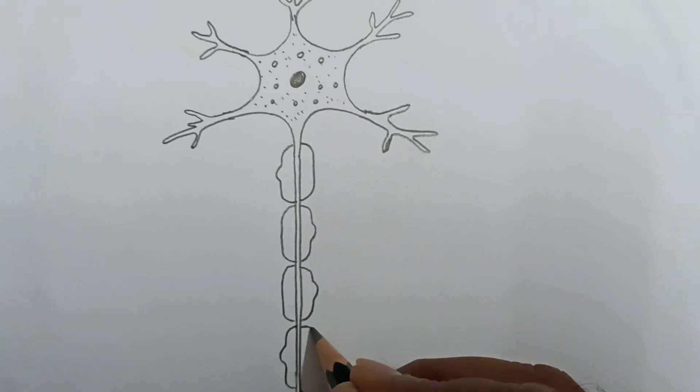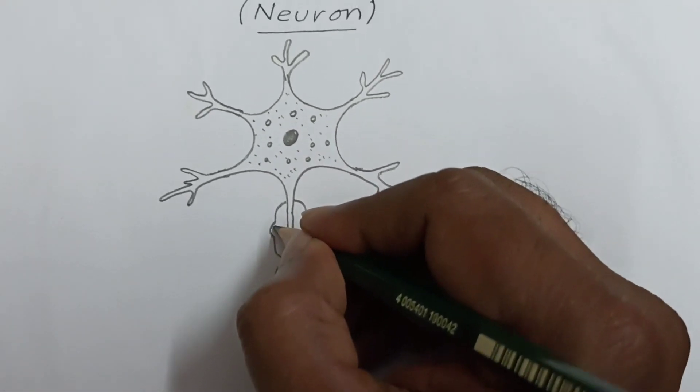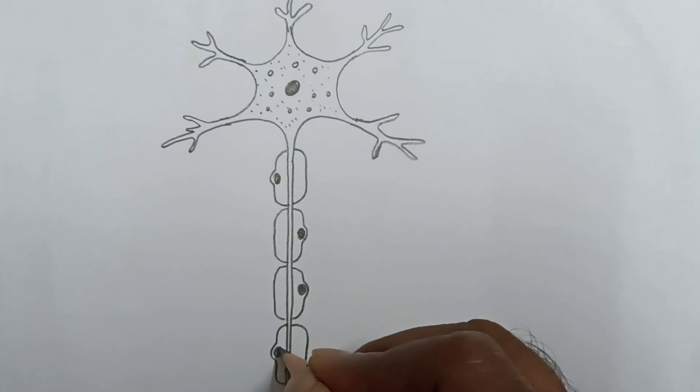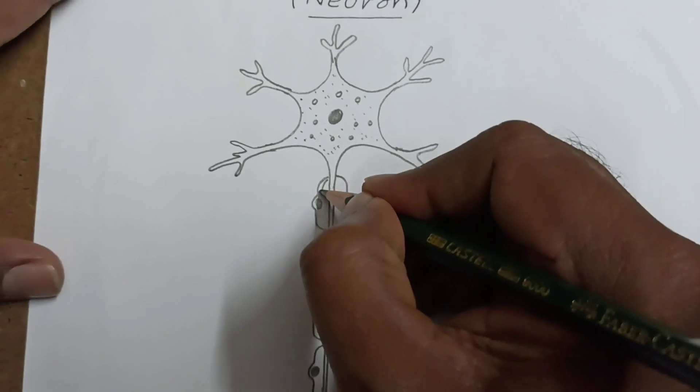You draw like this. These are Schwann cells.